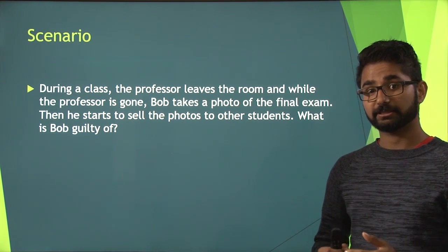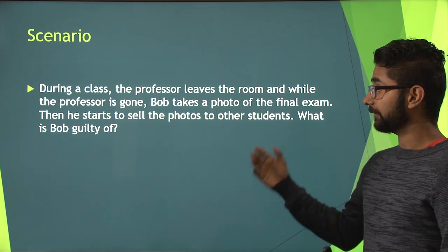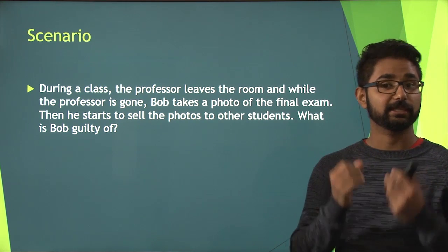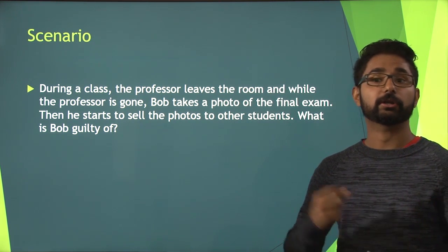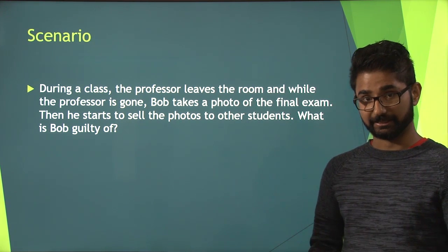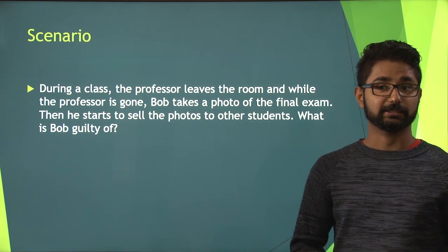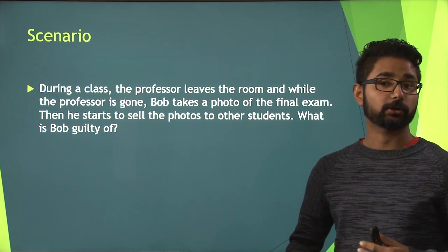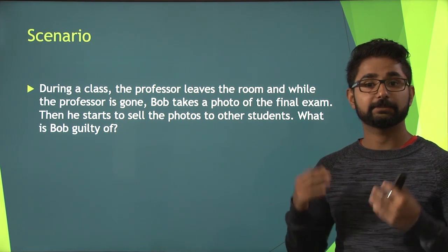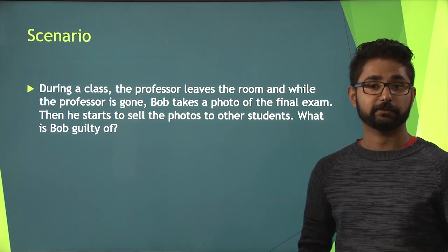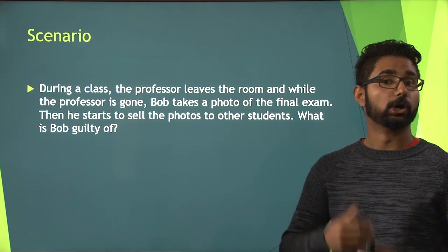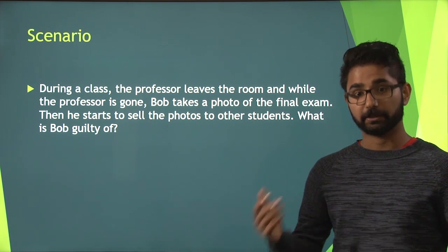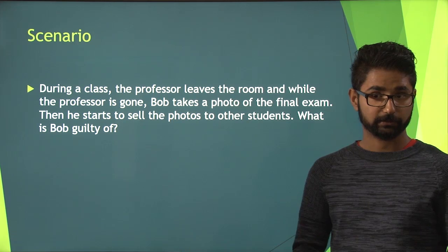Furthermore, Bob is guilty of cheating himself because he'll be using these photos on the upcoming exam. And lastly, this can be viewed as a form of obstruction because he's making it harder for the students that aren't cheating to gain a good grade if the professor marks on a curve.